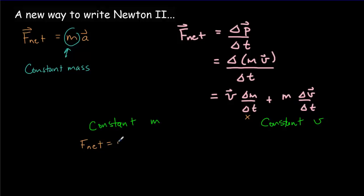What's new is when we've got a constant velocity — for example, water coming out of a hose moves with a constant velocity, but the amount of water that has come out is constantly increasing. In that case, the net force equals that constant velocity times the rate of change of mass — how quickly the mass is being ejected. We'll deal with this case in a later video on fluid jets.